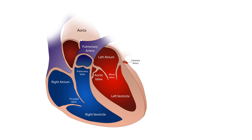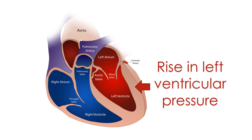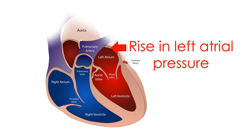When the heart is unable to relax well and fill properly, filling pressures rise in an attempt to maintain a good output. This means that pressure in the left ventricle when it relaxes is higher. A higher pressure in the left ventricle is transmitted back to the left atrium — the upper chamber from which it receives blood when it relaxes. A rise in left atrial pressure is in turn reflected onto the pulmonary veins, which bring oxygenated blood to the left atrium from the lungs. Increased pressure in the pulmonary veins increases the pressure in the small blood vessels of the lungs known as capillaries.